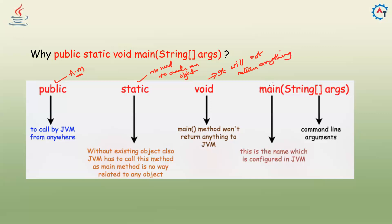The name 'main' is pre-configured in the JVM. JVM is pre-configured to find this method with this specific signature and start execution from there. For 'String args': if you want to pass any command line arguments, you can pass them using this String args parameter. We already covered command line arguments in a previous video — this is how you pass values from the command prompt.